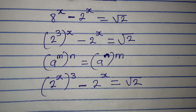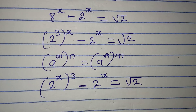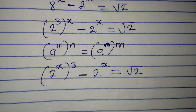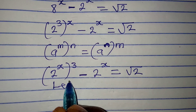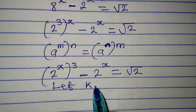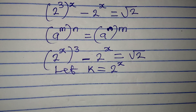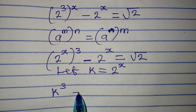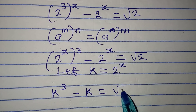Now I have 2^x in two places, so we can replace that right away. I want to use k for 2^x. So let k equal 2^x. This means we now have k to the power of 3 minus k, equal to square root of 2.